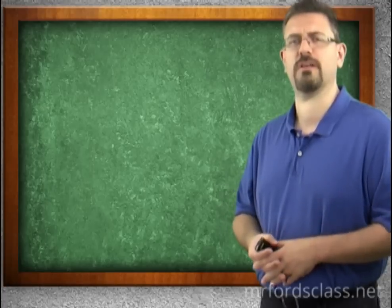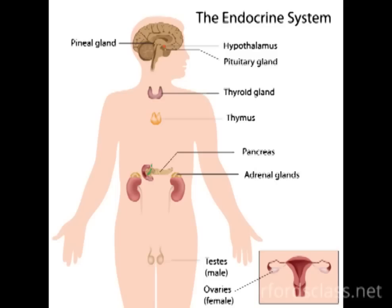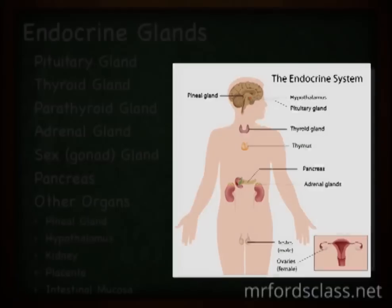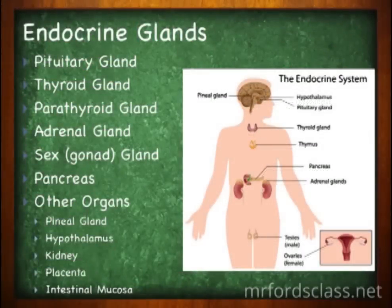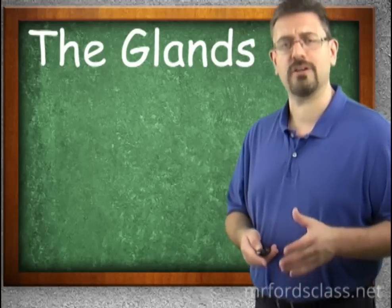Here are the endocrine glands. You should be aware of their location. We have the pituitary gland, the thyroid gland, the parathyroid gland, the adrenal gland, the sex glands — i.e. the gonads — the pancreas, and other endocrine glands: the pineal gland, the hypothalamus, the kidneys, the placenta, and the intestinal mucosa. Some of these we will look at in other lessons — for example, intestinal mucosa goes great with our discussion on the digestive system.